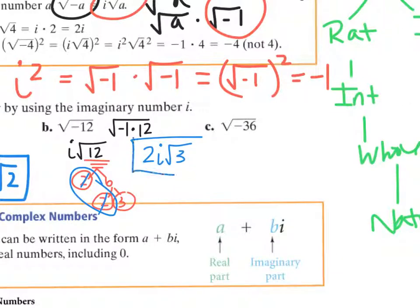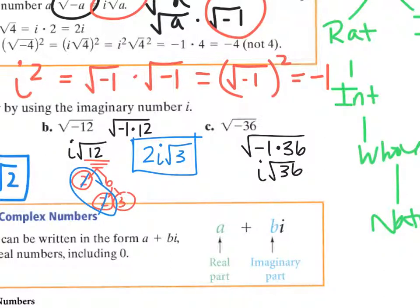Letter C is the square root of negative 36. That's the square root of negative 1 times 36, so that's i root 36. But the square root of 36 is just 6, so the answer is 6i.